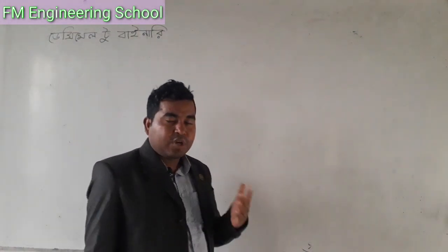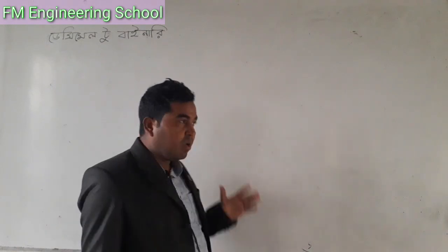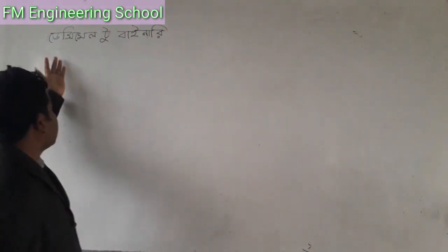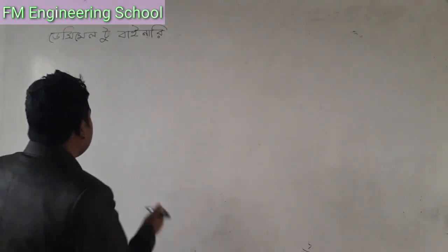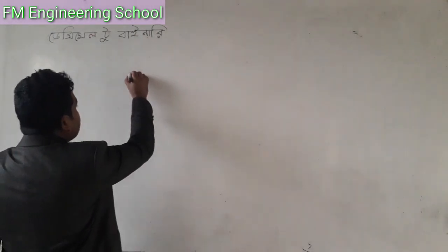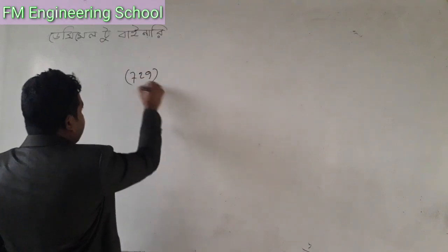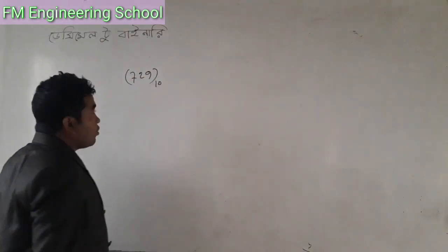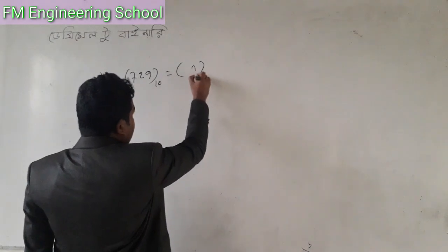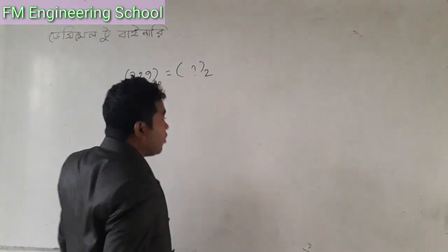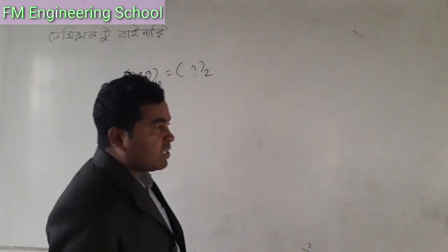The conversion process for decimal to binary is similar across these number systems. We need to write this equation and understand the binary representation. Since it comes to binary, we have to write this out just about binary.